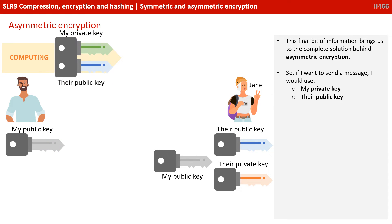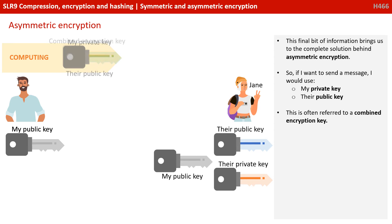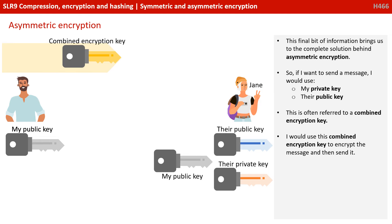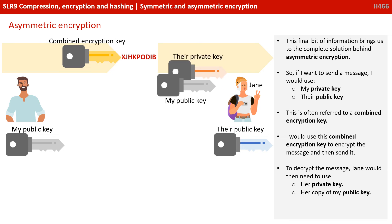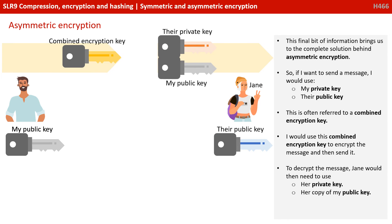This brings us to the complete solution behind asymmetric encryption. If I want to send a message, I would actually use my private key and my copy of Jane's public key. This is often referred to as a combined encryption key. I would use this combined encryption key to encrypt the message and send it on its way to Jane. To decrypt the message, Jane would then need to use her private key and her copy of my public key.